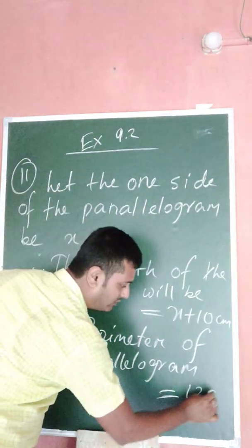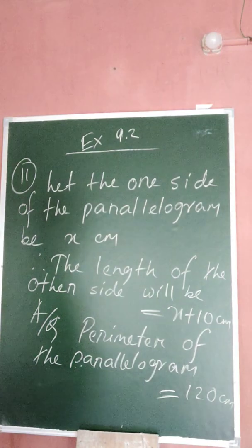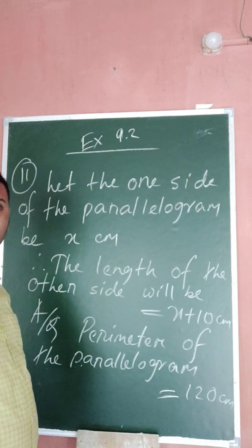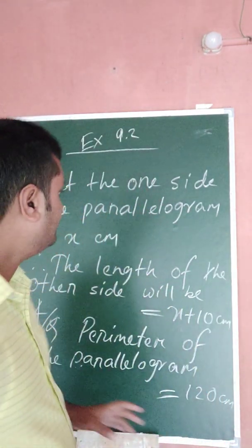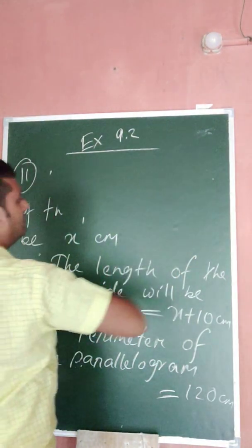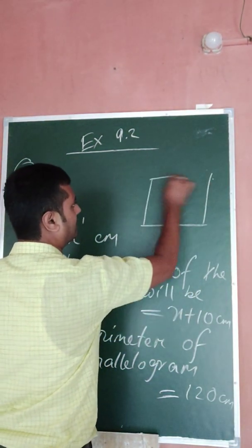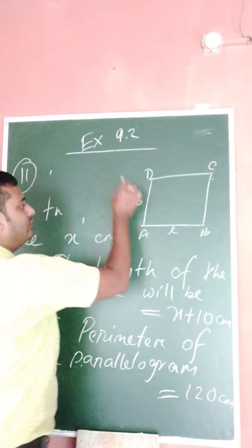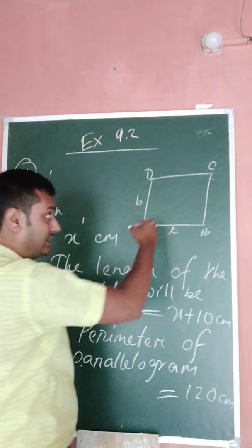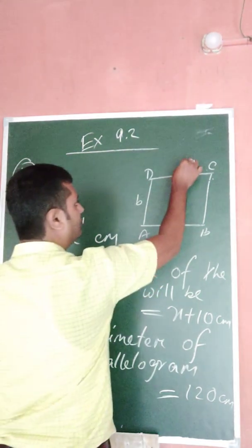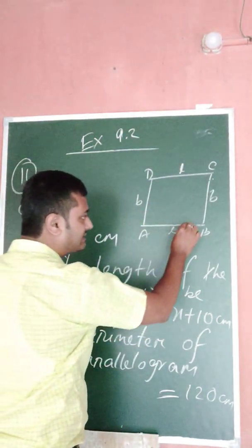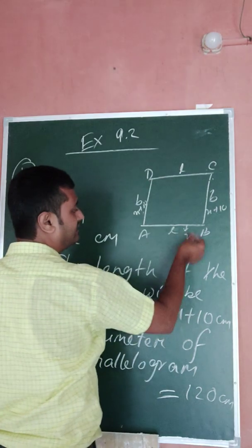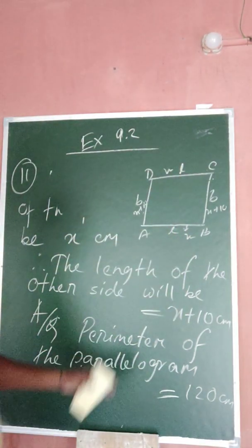The perimeter of the parallelogram is 120 centimeters. The formula for perimeter of a parallelogram is 2 into l plus b, that means 2 into length plus breadth, or 2 into the sum of the two adjacent sides. Suppose the parallelogram is ABCD — AB is the length and BC is the breadth. In a parallelogram, opposite sides are equal, so if one side is x, the opposite side is also x, and if one side is x plus 10, the opposite is x plus 10.